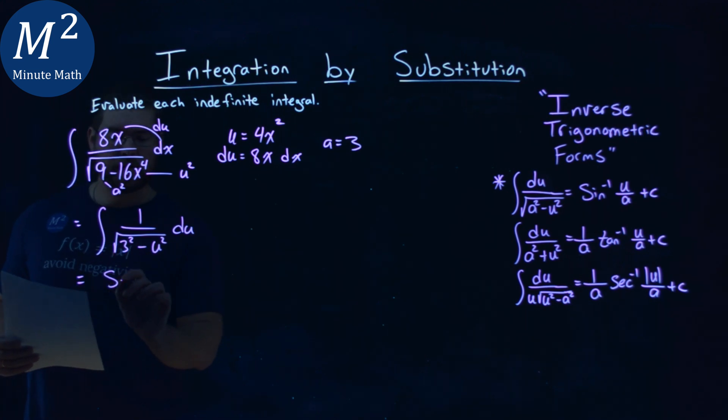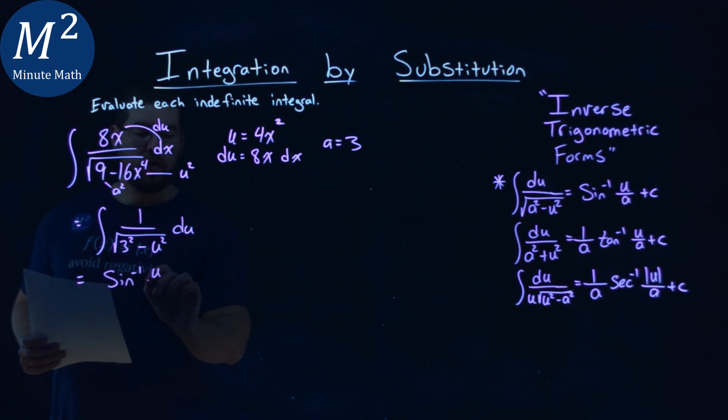Using the definition, we have the arc sine of u over a, which is 3, plus c.